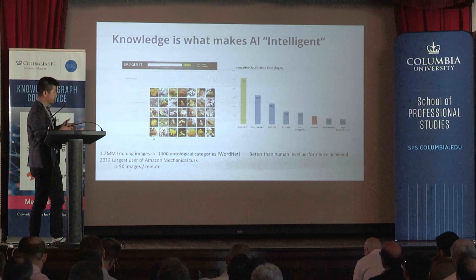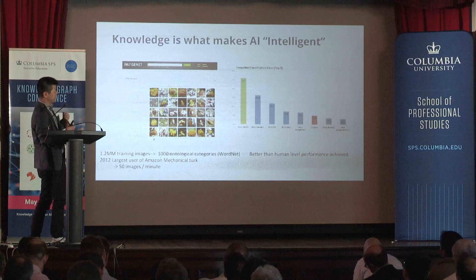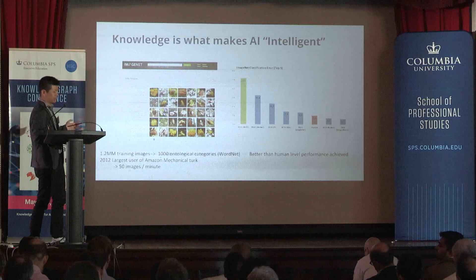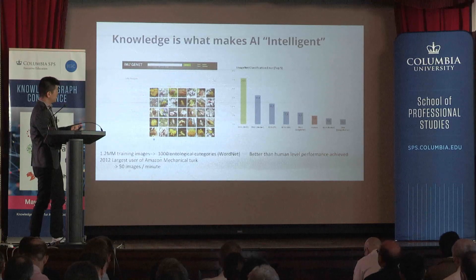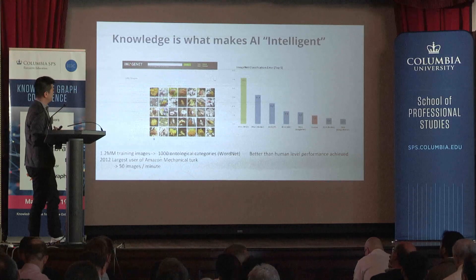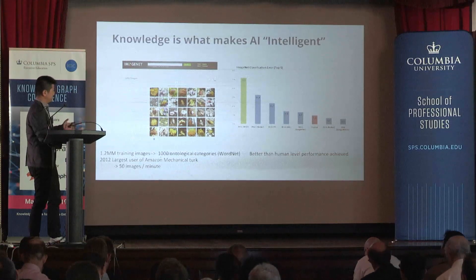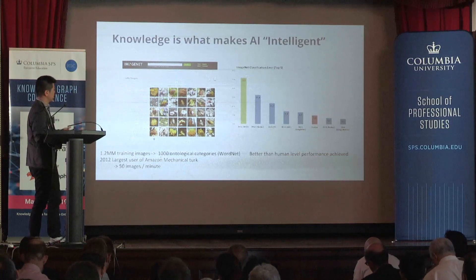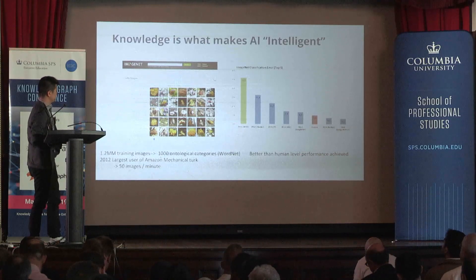Knowledge is really what — whether you're talking about supervised machine learning where you're providing semantic labels, or unsupervised machine learning where you're trying to induce semantic labels — connects these learning systems to human beings. That's why it's the key ingredient to making intelligent systems.